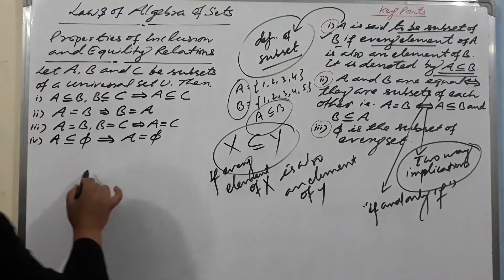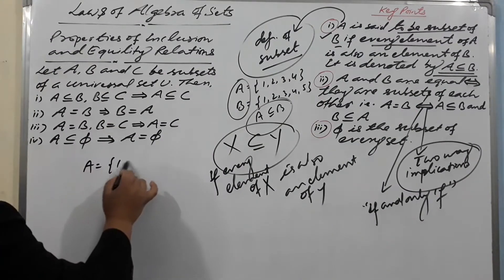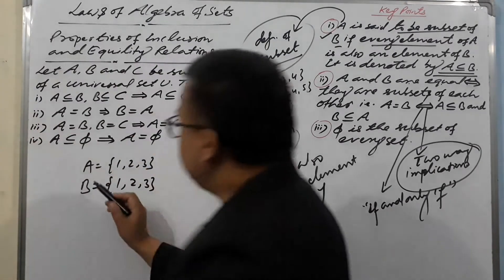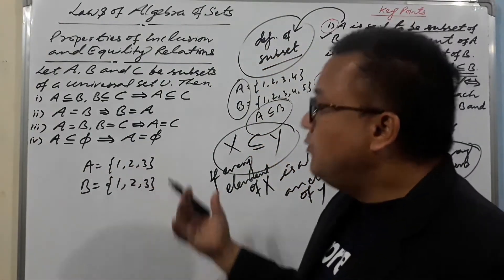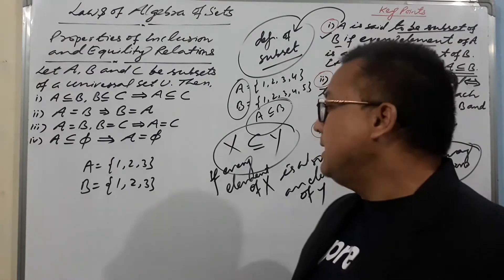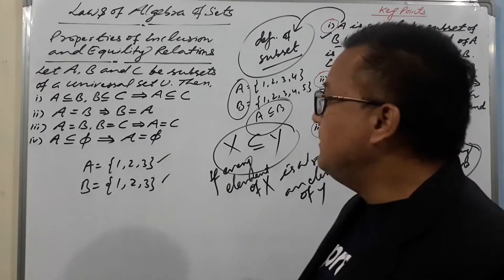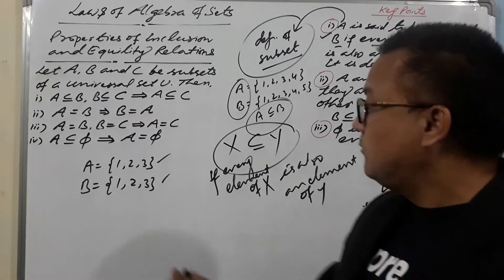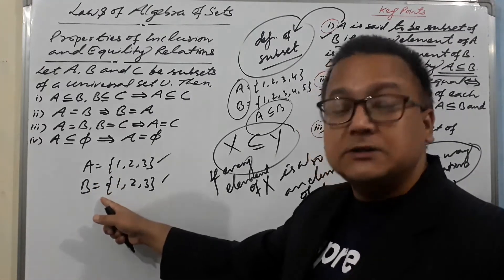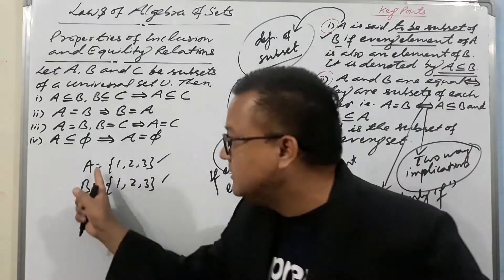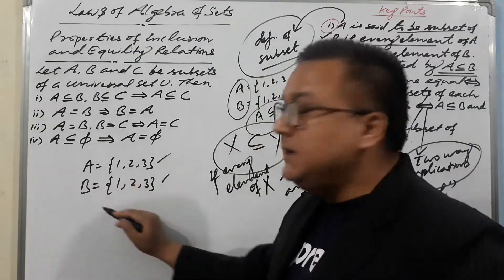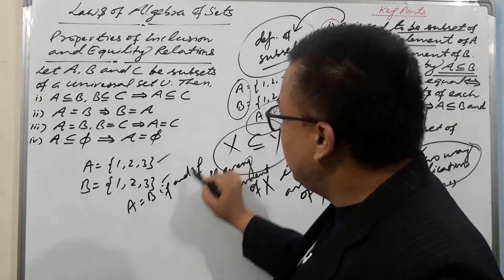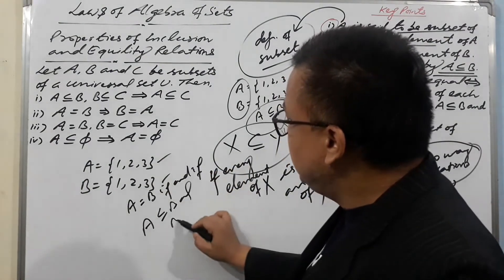For example, if A = {1, 2, 3} and B = {1, 2, 3}, then A and B are equal because they have the same elements. In terms of subsets, every element of A is also an element of B, and every element of B is also an element of A. That's why we can say A ⊆ B and B ⊆ A, and therefore A = B.